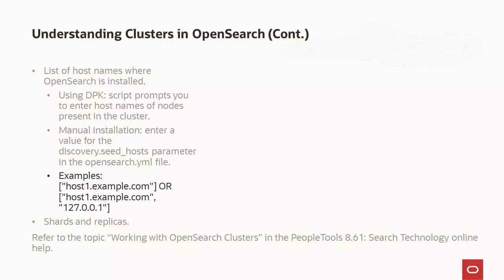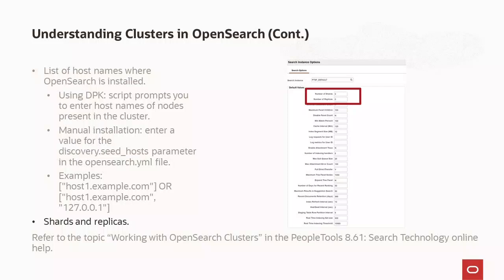In PeopleSoft Search Framework, each of these nodes needs to be added to the search instance properties page, unless you are relying upon a load balancer, which can be used in a failover scenario by PeopleSoft so that search requests can be directed to an available node. Shards and replicas are defined on the search options page in PIA after deploying OpenSearch and connecting to the PeopleSoft application through a search instance. OpenSearch provides the ability to subdivide your index into multiple pieces called shards. Each shard is a fully functional and independent index that can be hosted on any node in the cluster. OpenSearch allows you to make one or more copies of your index shards into what are called replica shards, or replicas for short.